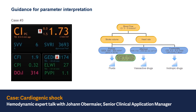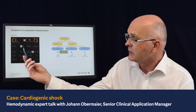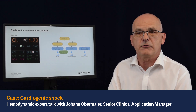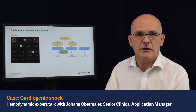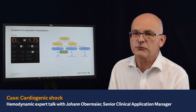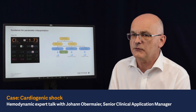When looking at stroke volume variation — assuming the patient is under controlled mechanical ventilation — this is pretty low because the patient is already more than well filled. The systemic vascular resistance is dramatically increased; the patient is vasoconstricted, centralized.